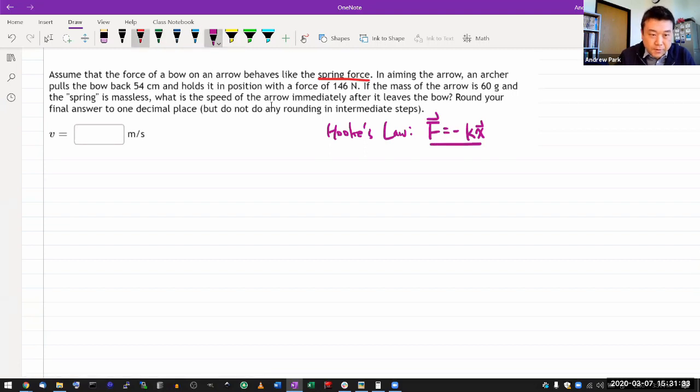So, okay, let me keep going. Spring force and aiming there. The archer pulls the bow back and holds in position with the force of 146 N. Okay, so I'm beginning to see that, okay, so good that I have Hooke's Law. Because I am being given the displacement and the force, but I'm not given the spring constant. So I probably will need to figure out spring constant as part of problem solving for this question. If the mass of the arrow is some mass and the spring is massless, okay, what is the speed of the arrow? Immediate speed, what?